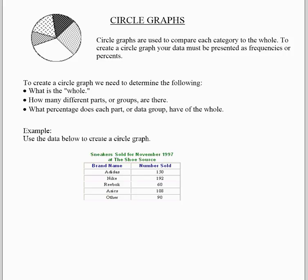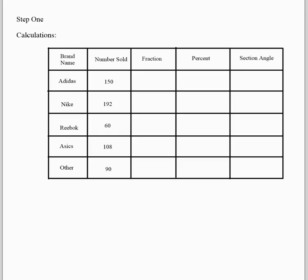Often with circle graphs you are converting your data into percentages, looking at the data as a percentage of the whole. For example, we've got information here about some sneakers sold at a store, telling you how many of each kind were sold. The first thing you have to do is make sense of that data compared to the whole using a tally chart. You add up Adidas, Nike, Reebok, A6, and Other to get a total of 600.